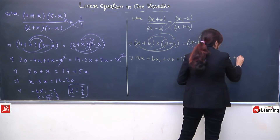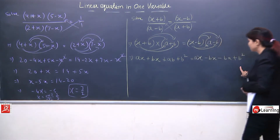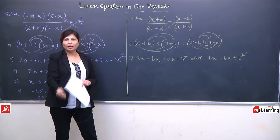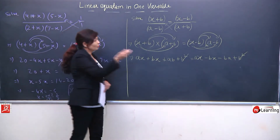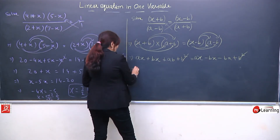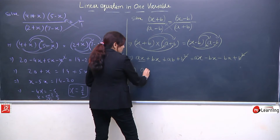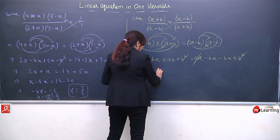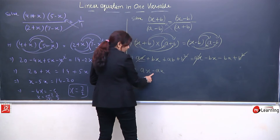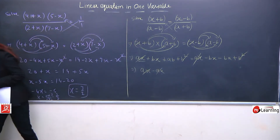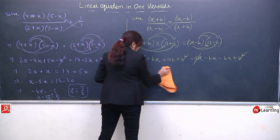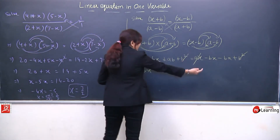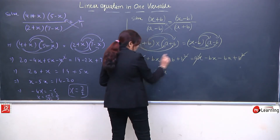Right hand side same procedure: x multiplied by a gives ax, minus bx. Similarly b ka karenge: minus ba, and minus b multiplied by minus b is plus b square. Ab ismein jo eliminate ho raha hai — b square minus b square will give 0 — so maine LHS aur RHS dono mein se usse cut down kar diya. Then ax and ax will also eliminate. Ab hamare paas bachi: bx on the left, and when the right-hand side bx comes to the left it becomes plus bx.